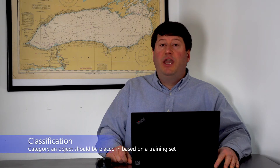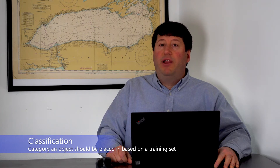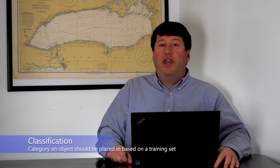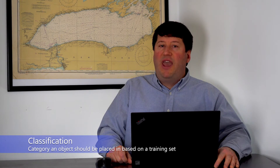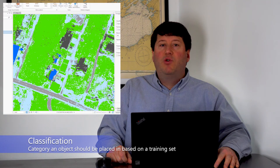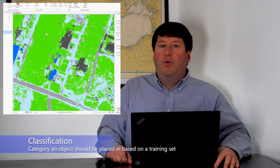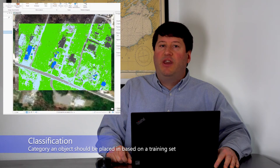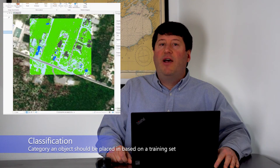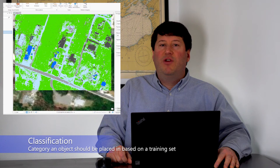Data classification is the idea of which category an object should be placed in based on a training set. Data classification is commonly used with remote sensing data sets for both analyzing and categorizing pixels. The hands-on GIS laboratory exercise we will do later in these videos will provide you with an opportunity to learn about support vector machine classification in the context of classifying features from disaster imagery.